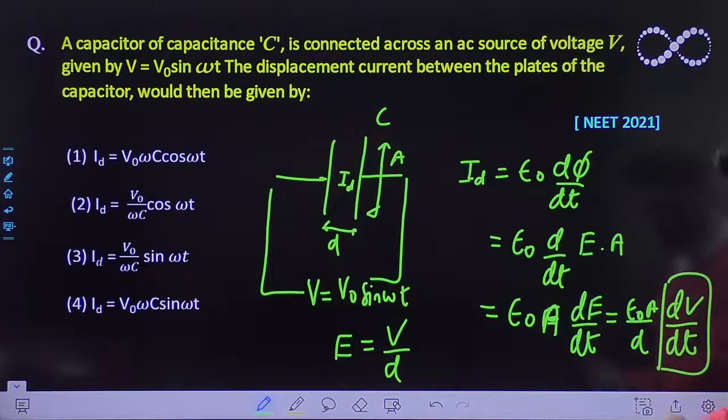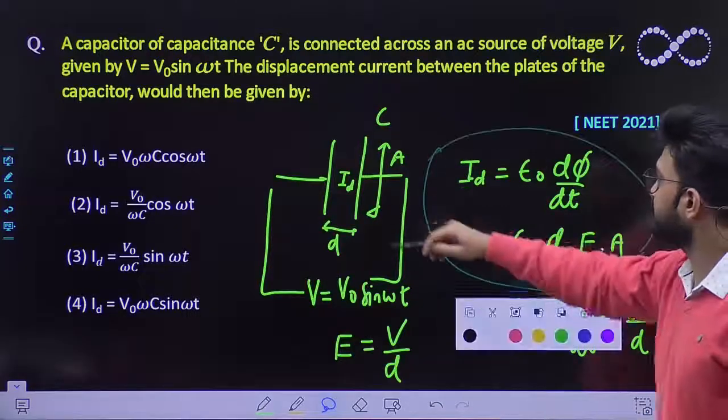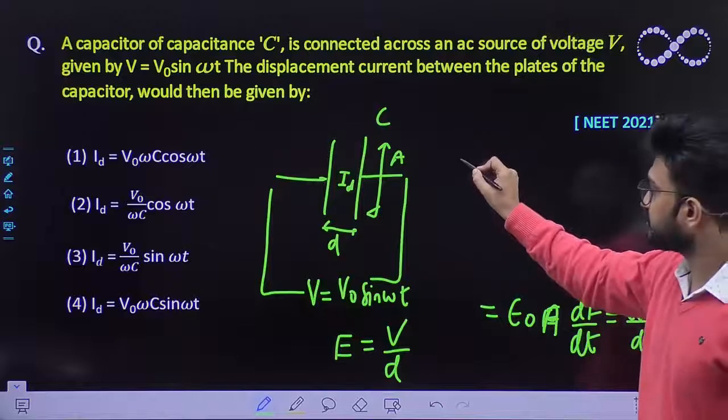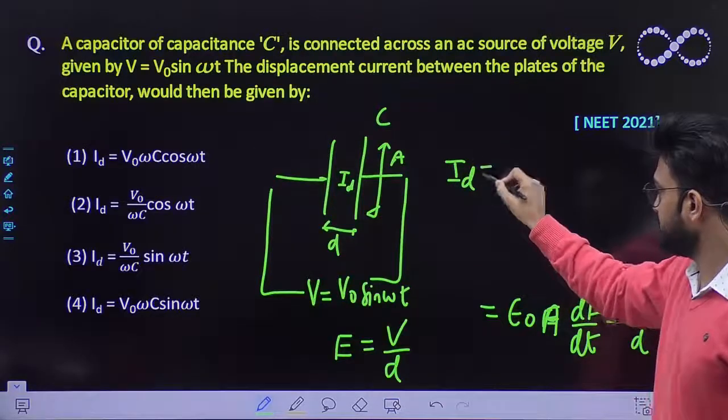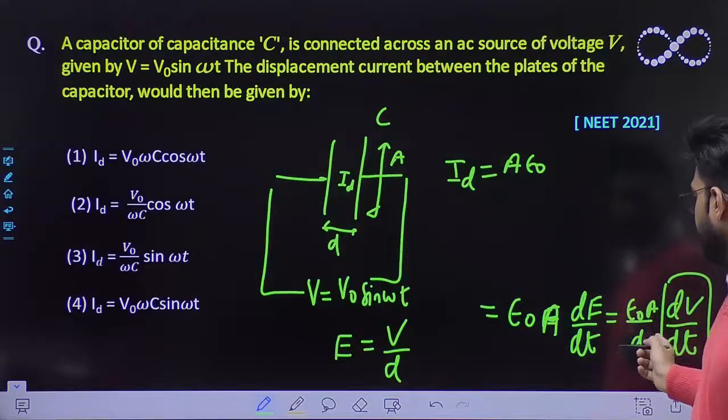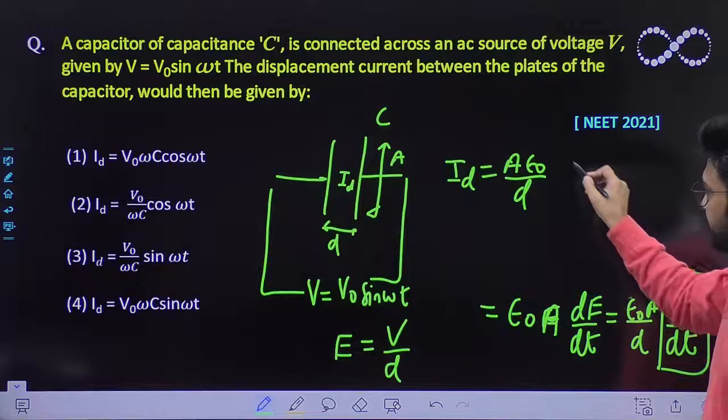So now what you can do is we have to differentiate V with respect to time. So final answer that we will be getting is, this ID must be equal to ε0 A/D times dV/dt.